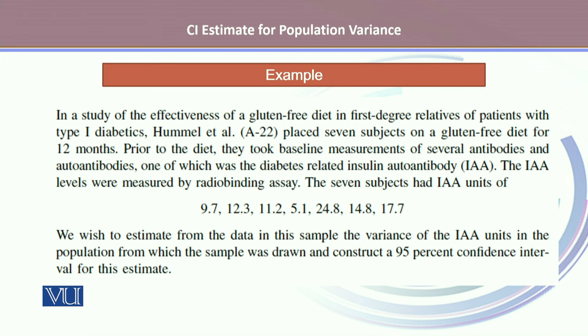The insulin autoantibody levels were measured by radio binding assay. The seven subjects had insulin autoantibody units which are given below. We wish to estimate from the data in the sample the variance of the insulin autoantibody units in the population from which the sample was drawn, and we want to construct a 95% confidence interval for this estimate.